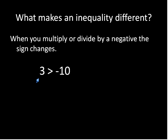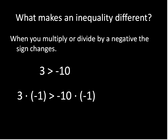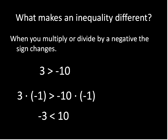If we have this inequality here, 3 is greater than negative 10. That's pretty straightforward — 3 is definitely bigger than negative 10, that's a true statement. Now, what happens if we multiply both sides by negative 1? 3 times negative 1 gives me negative 3, and negative 10 times negative 1 gives me positive 10. Is the statement true anymore? Negative 3 is greater than 10? No, that's not true. So you can see that whenever you multiply or divide both sides of an inequality by a negative number, that sign has to switch to make sure it's still a true statement. We switch the sign, and it is a true statement.